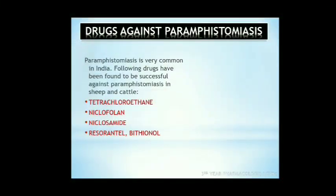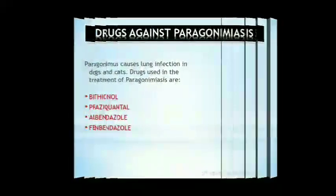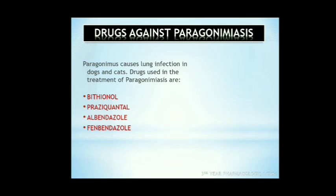Drugs against paramphistomiasis. Paramphistomum infection is very common in India. Animals suffering from this show anorexia, increased water intake, and watery fetid diarrhea. It is observed that drugs used against liver flukes and cestodes in ruminants give good results in paramphistomiasis. The drugs are tetrachloroethylene, niclofolan, niclosamide, resorantel, bithionol, or bithionol sulfoxide in sheep and cattle. Paragonimosis is caused by lung infection in dogs and cats by Paragonimus. Drugs used against paragonimosis are bithionol, praziquantel, albendazole, and fenbendazole.